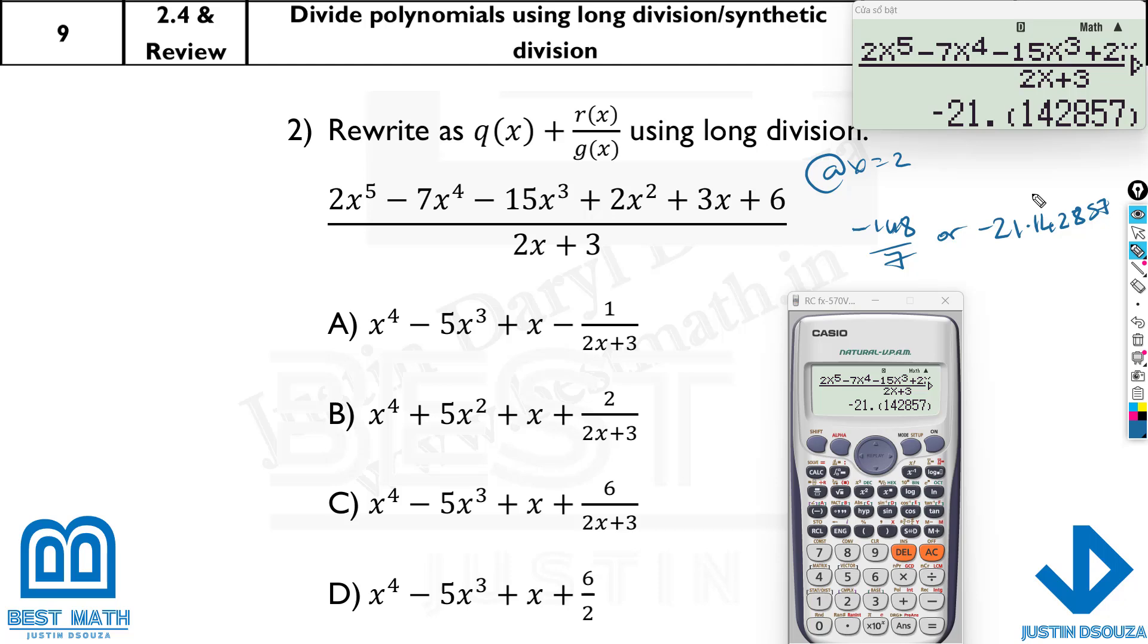At x equals 2, it is minus 148 by 7, or minus 21.142857. Now, why are these brackets there? That means these numbers will keep on repeating. After this, again, the next one will be 142857. It keeps on repeating. That's what these brackets mean. Now, I need to try these options. So, you need to be very careful whether you have put the given question properly.